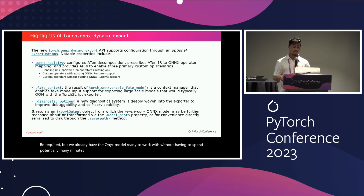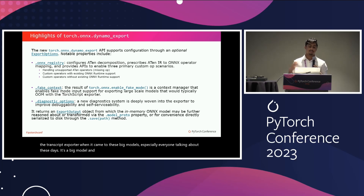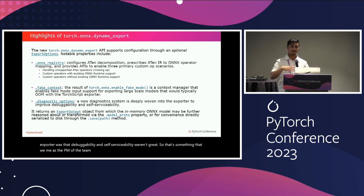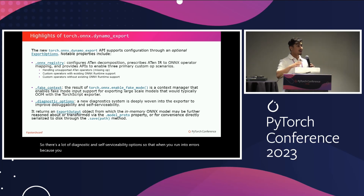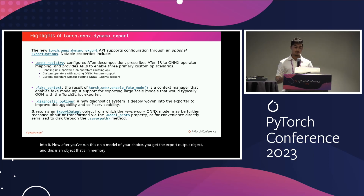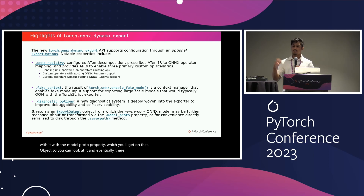We ran into issues previously with the TorchScript exporter when it came to big models — everyone's talking about LLaMA these days. It's a big model and we run into memory issues, but with fake context you don't have to worry about those. Another thing we noticed with the old TorchScript exporter was that debuggability and self-serviceability weren't great. As the PM of the team, I made sure to really emphasize that. So there are a lot of diagnostic and self-serviceability options so that when you run into errors — and you might right now since it's in beta — it'll be easy to figure out what to do. After you've run this on a model, you get the export output object, an in-memory object you can reason about with the model proto property. You can look at it and make changes and performance updates, or save it to disk as you would with any other ONNX model.